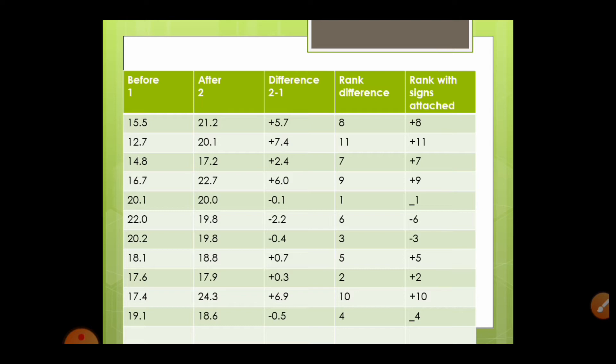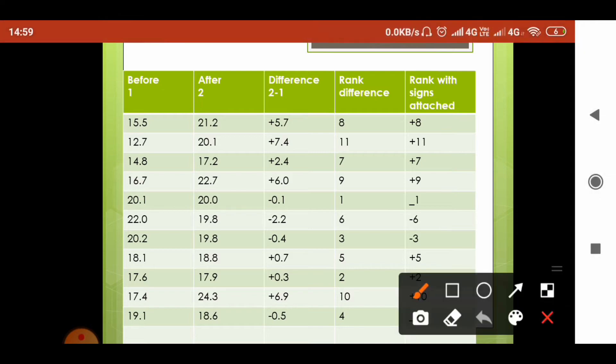I have made a table to show you what all we need for calculating the Wilcoxon signed rank test. In the first column, the before data is given. In the second column, the after data is given. In the third column, the difference between the first column and second column. Here the difference is 15.5 minus 21.2, that is minus 5.7. Similarly, 20.1 minus 12.7 is 7.4. We have calculated all the differences.